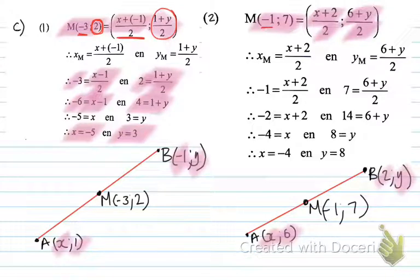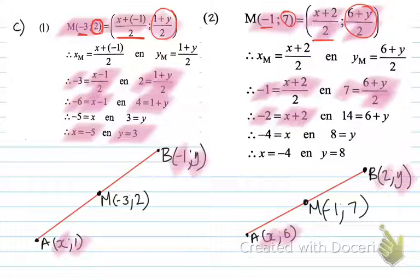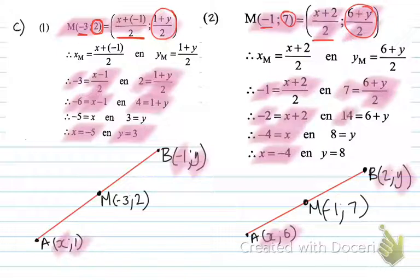Setting x-values equal: -1 = (x + 2) / 2. Multiplying by 2: -2 = x + 2. Subtracting 2 gives x = -4. For the y-values: 7 = (6 + y) / 2. Multiplying by 2: 14 = 6 + y. Subtracting 6 gives y = 8.